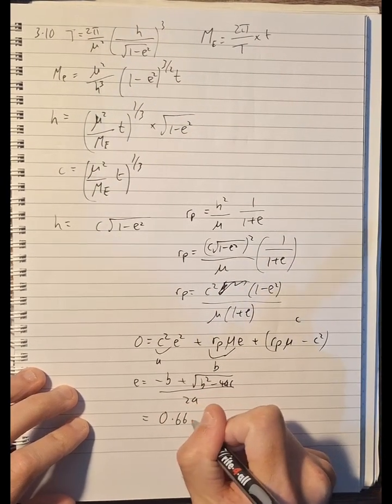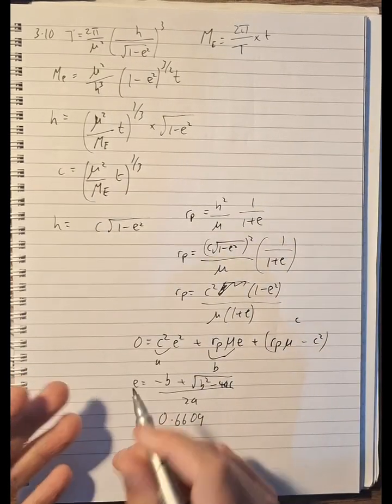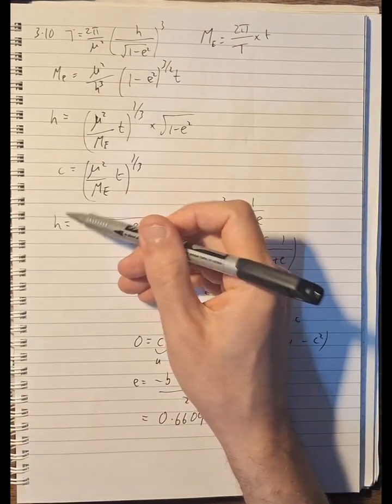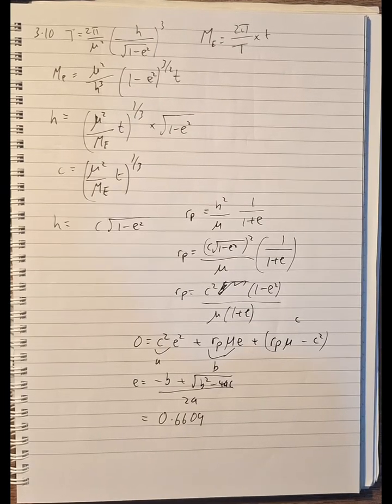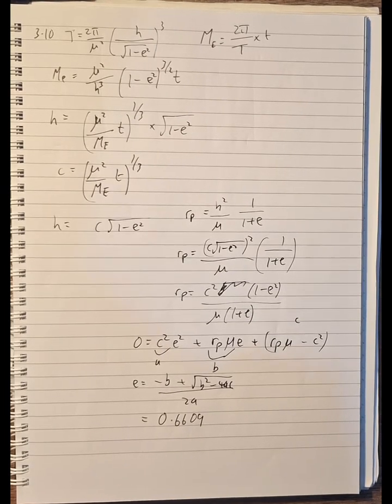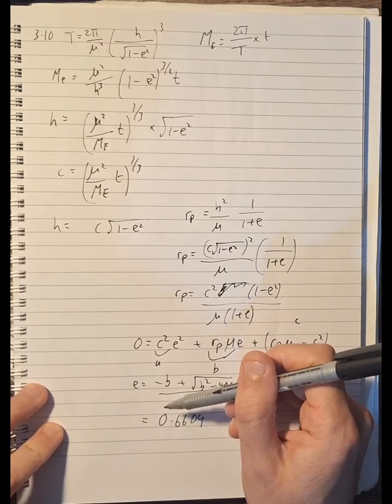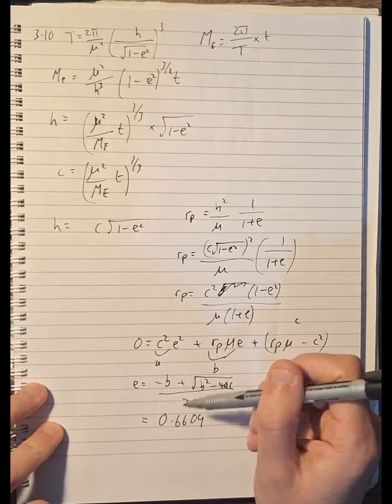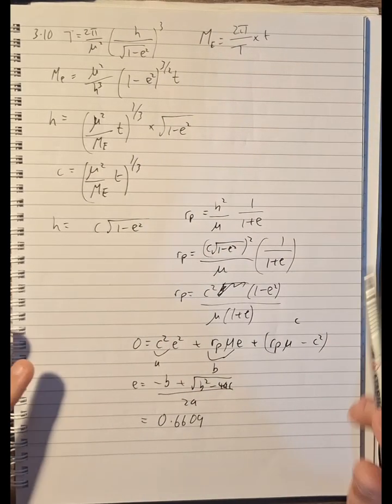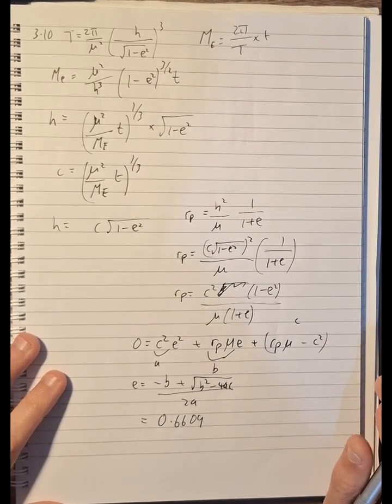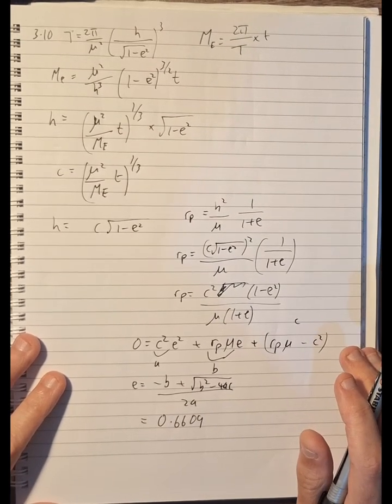Okay, now that you have e you can get h, and when you have e and h you can refer to the previous video on how to use that in the numerical solution. So this is the system for deriving the orbit eccentricity, but after this it's the same as problem 3.09.